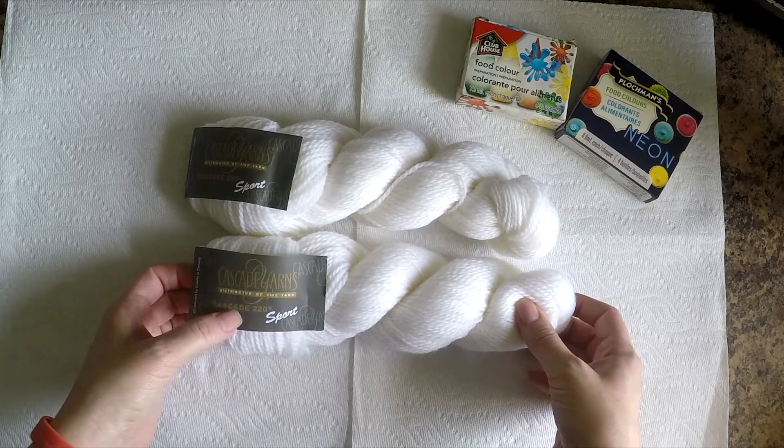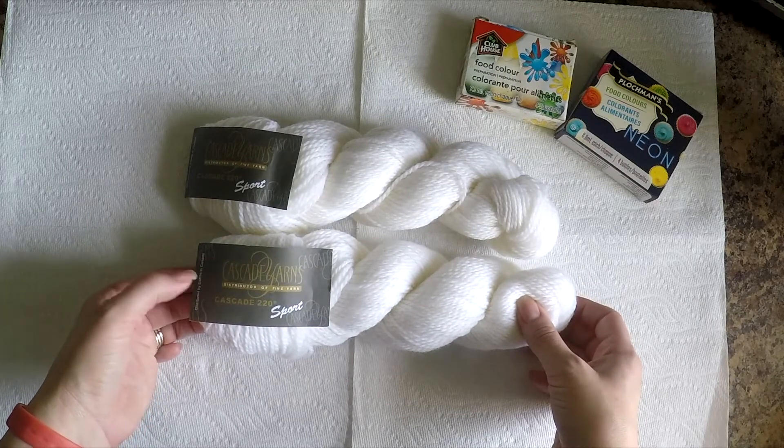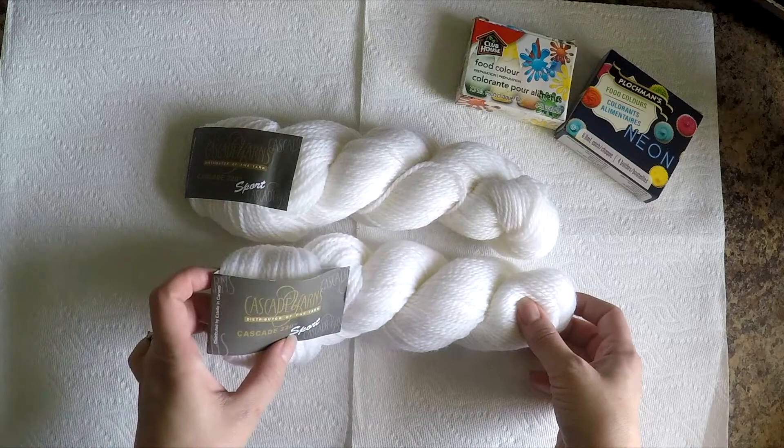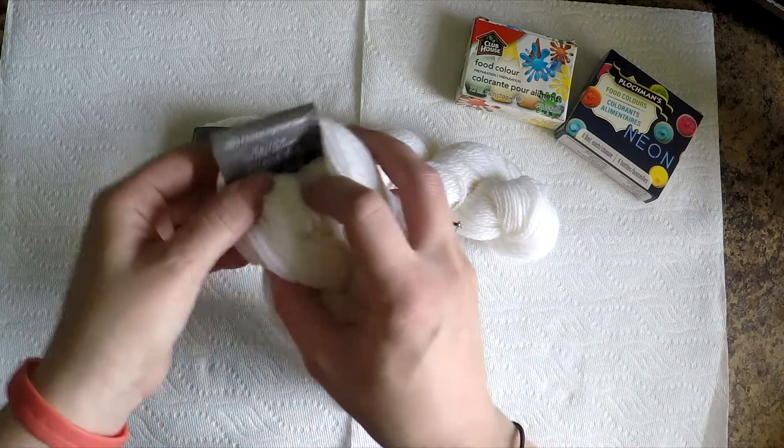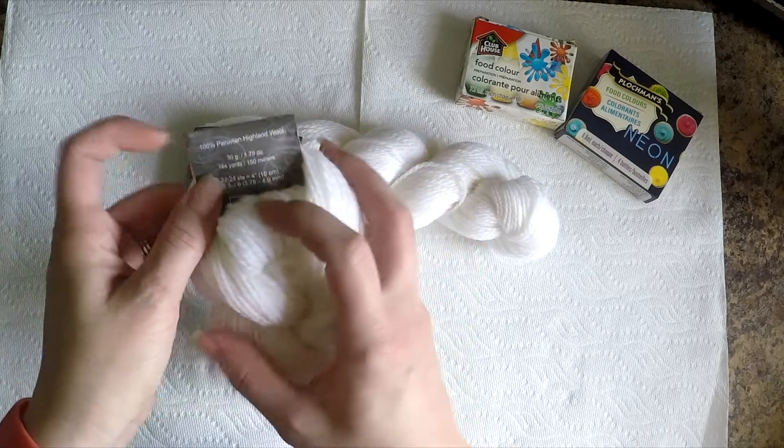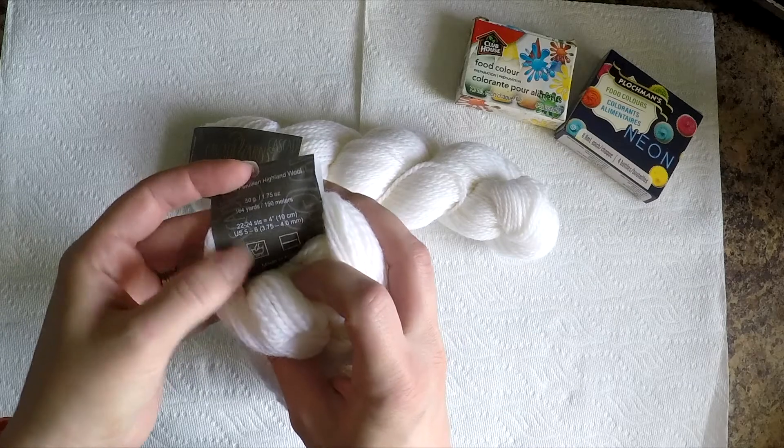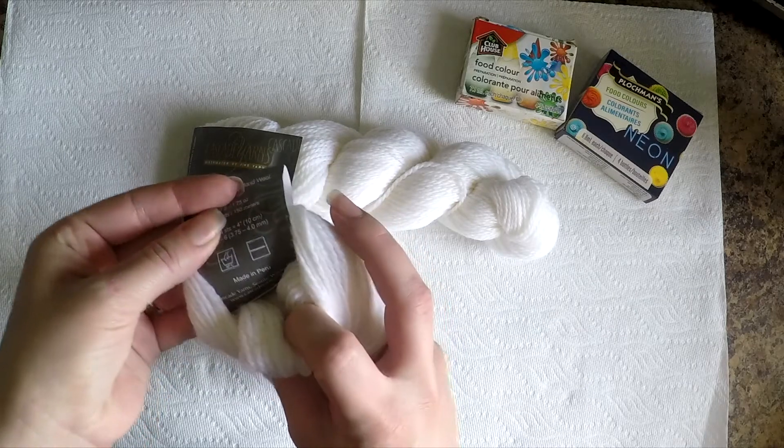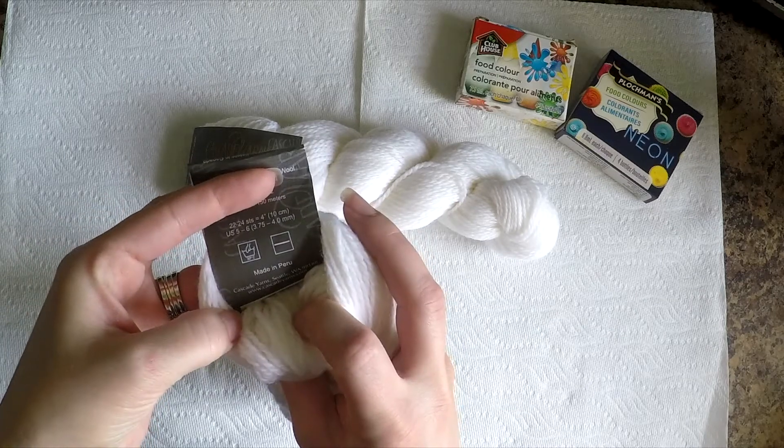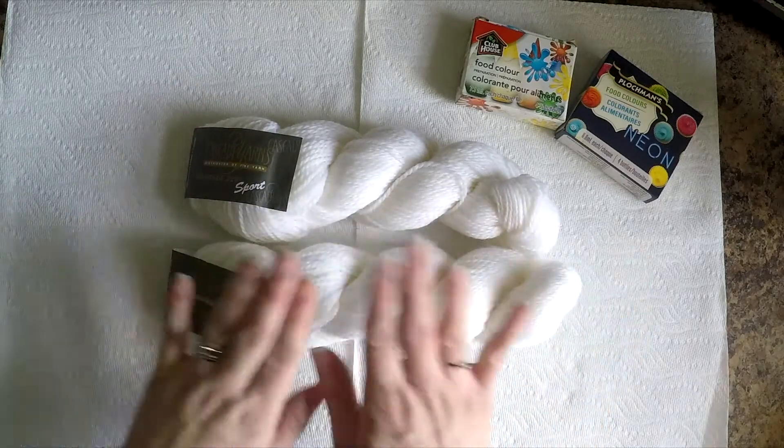We're going to be playing with Cascade Yarns in sport weight. This is 100% Peruvian Highland wool, a 50 gram ball, 164 yards or 150 meters, made in Peru. So we're going to play with these today.